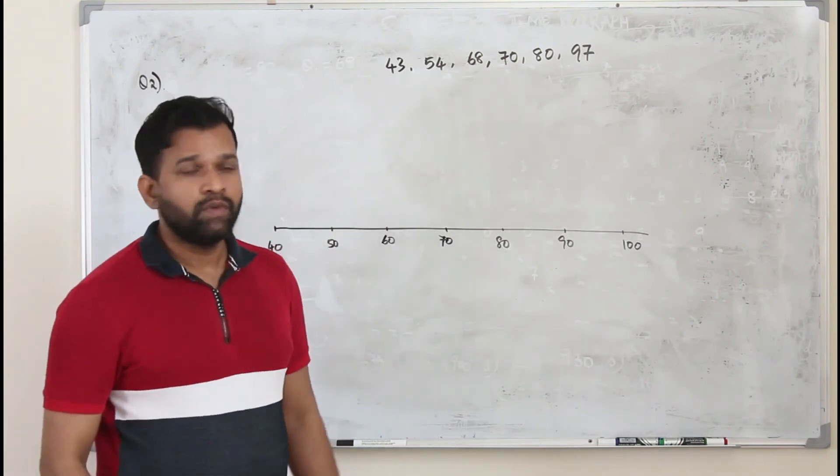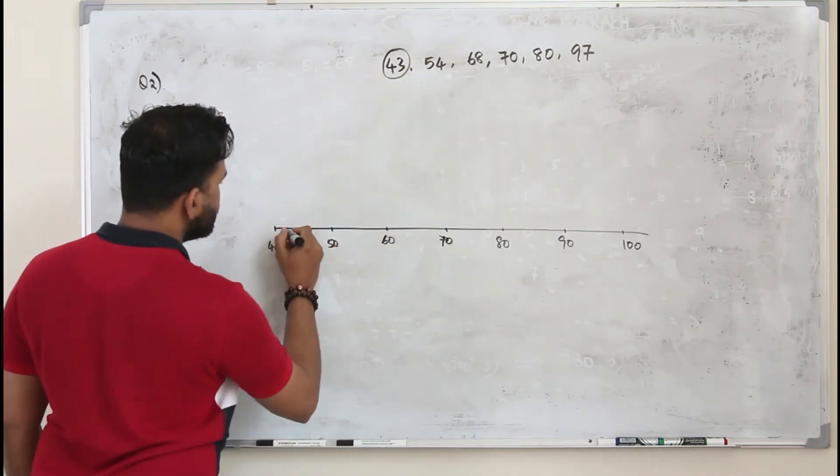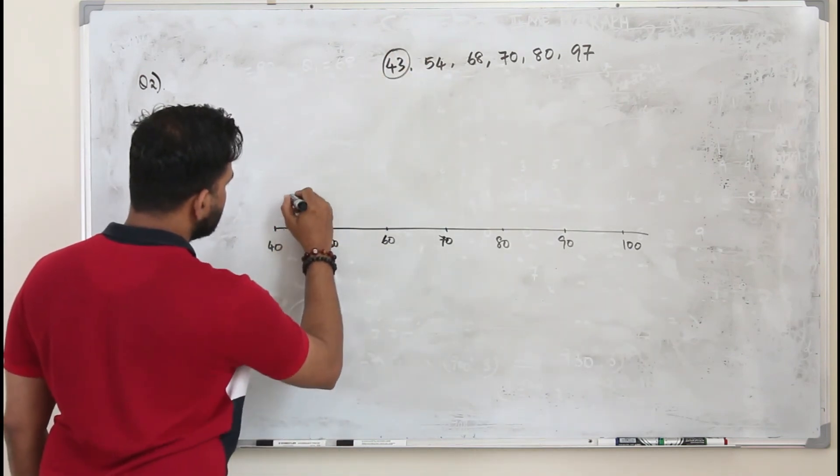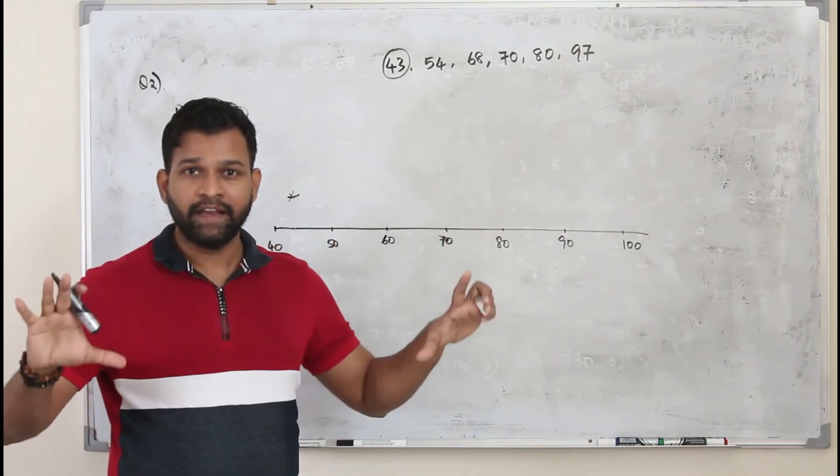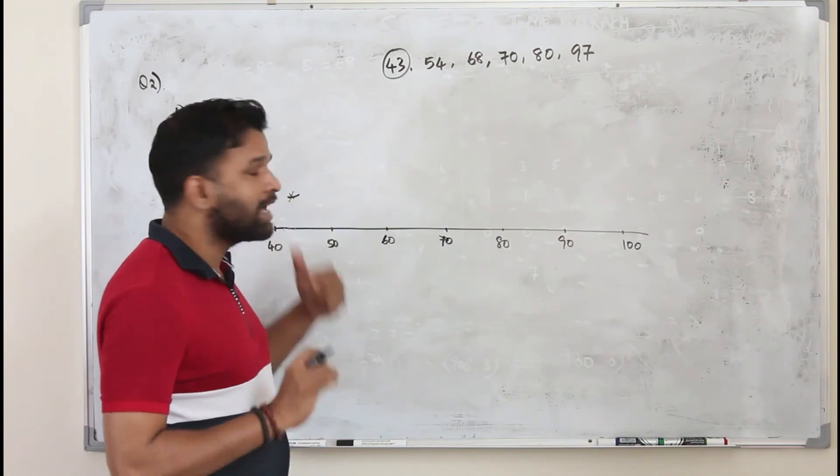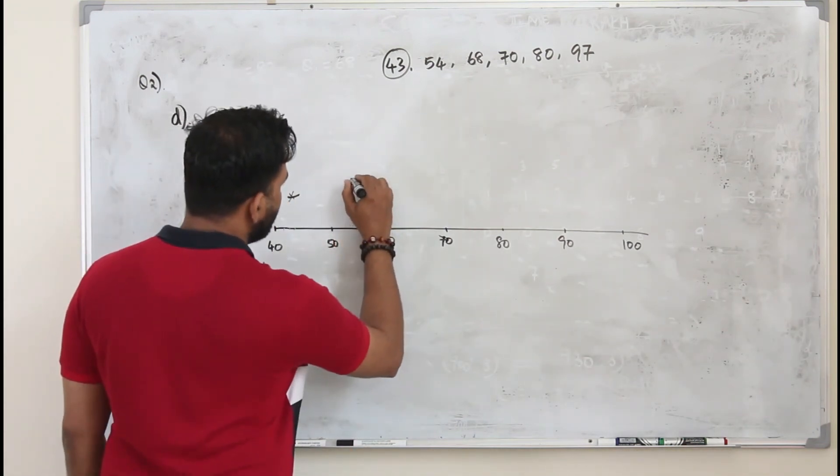So you have to mark all these values first. But this 43 is an outlier. Just put asterisk sign for outlier. But in your exam, you are given a grid actually. So you need to plot the numbers exactly on the grid.